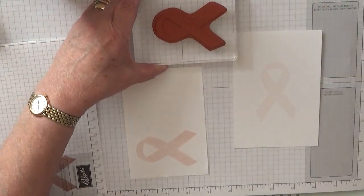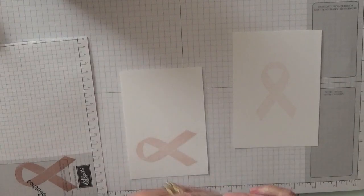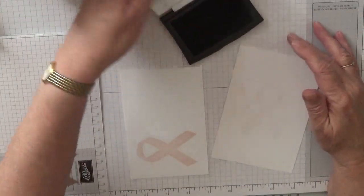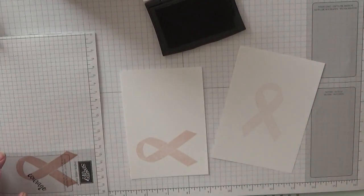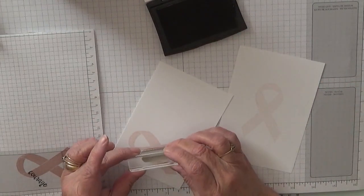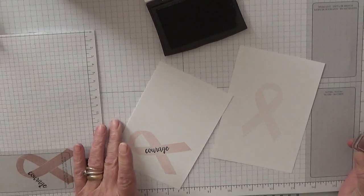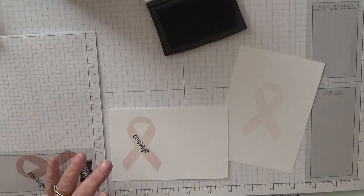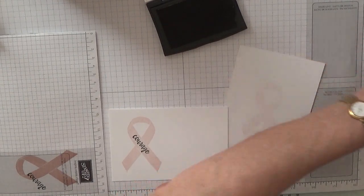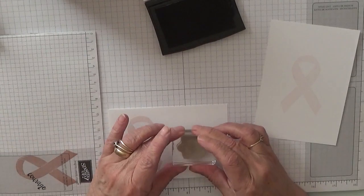That's all I need the pink for, my Blushing Bride. Now I've got a new black ink and it's Versafine Onyx Black, which I find is really nice. With the word 'courage,' I'm going to stamp that right in the middle of the ribbon like that, and then 'sending love and hugs' I'll stamp there.